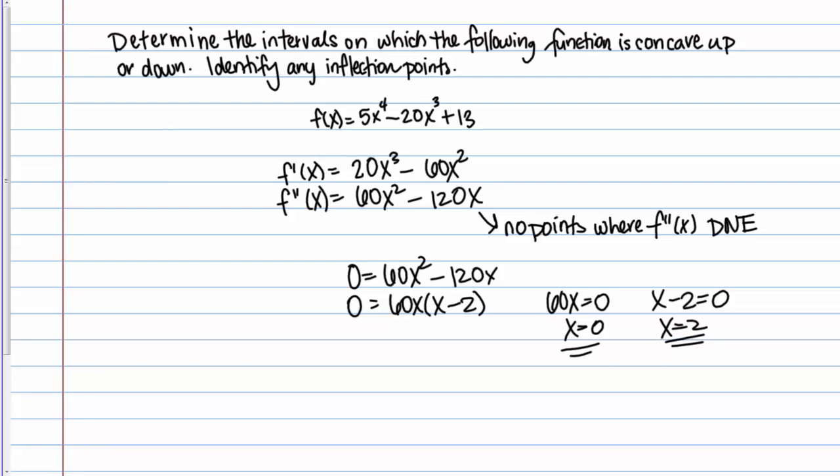These are possible inflection points. They aren't necessarily inflection points. Just like when we find the zeros of the first derivative, those are possible max and mins, but not necessarily. We still have to check it. Same thing here. These are possible inflection points, but we need to check and see what the behavior actually is.